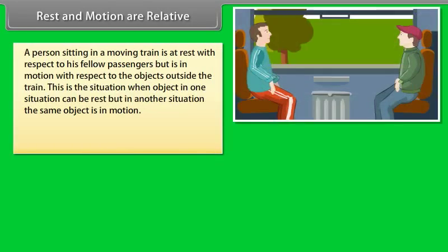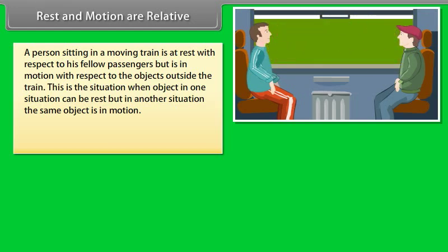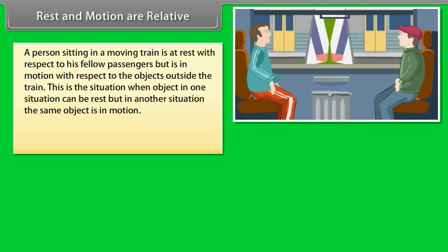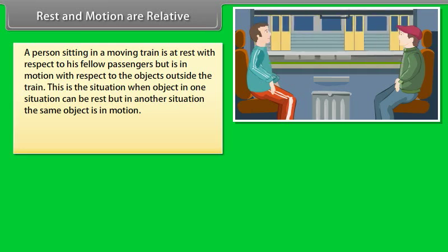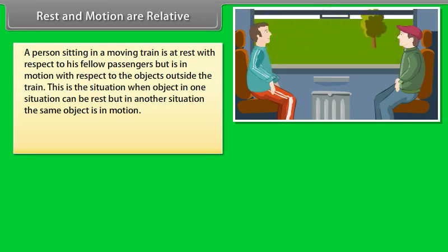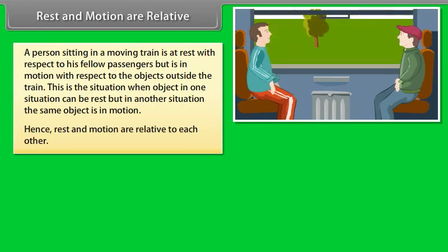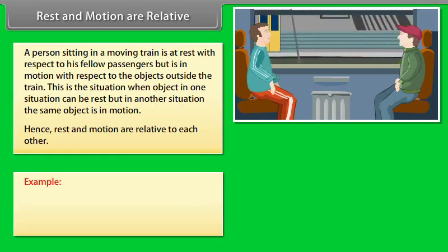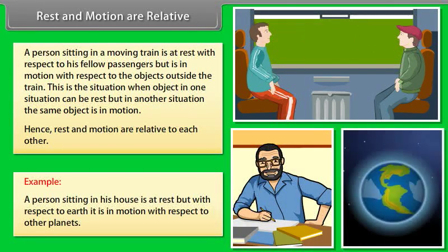Rest and motion are relative: A person sitting in a moving train is at rest with respect to fellow passengers but is in motion with respect to objects outside the train. Hence, rest and motion are relative to each other. For example, a person sitting in a house is at rest, but with respect to the Earth it is in motion, and with respect to other planets as well.